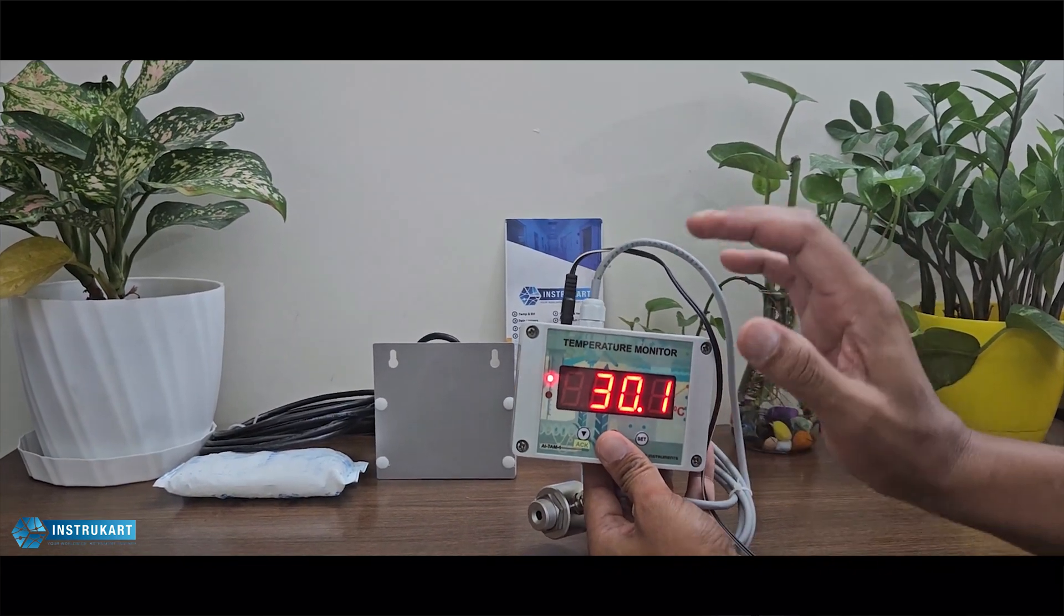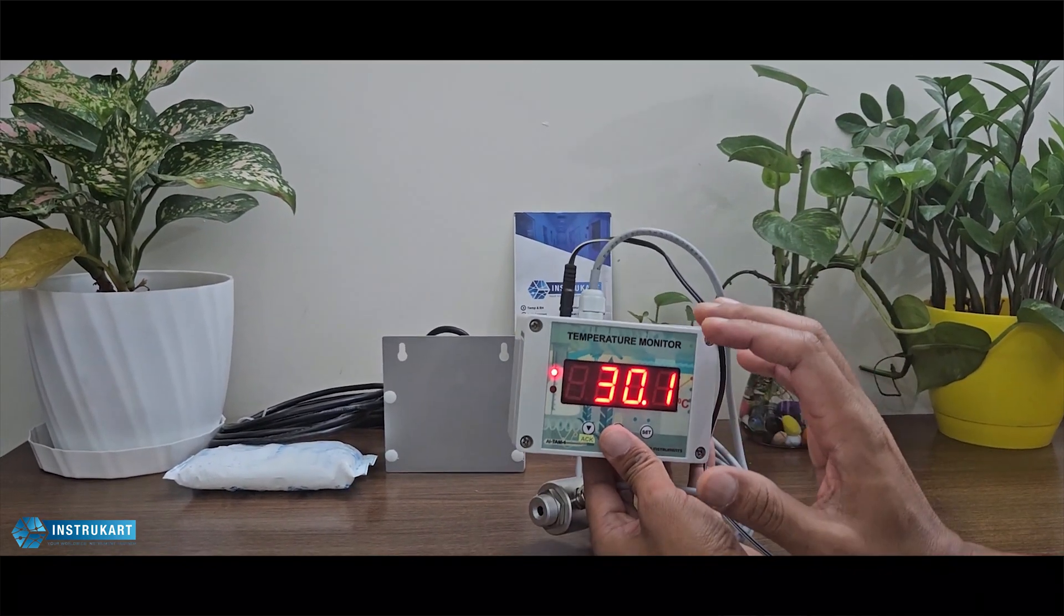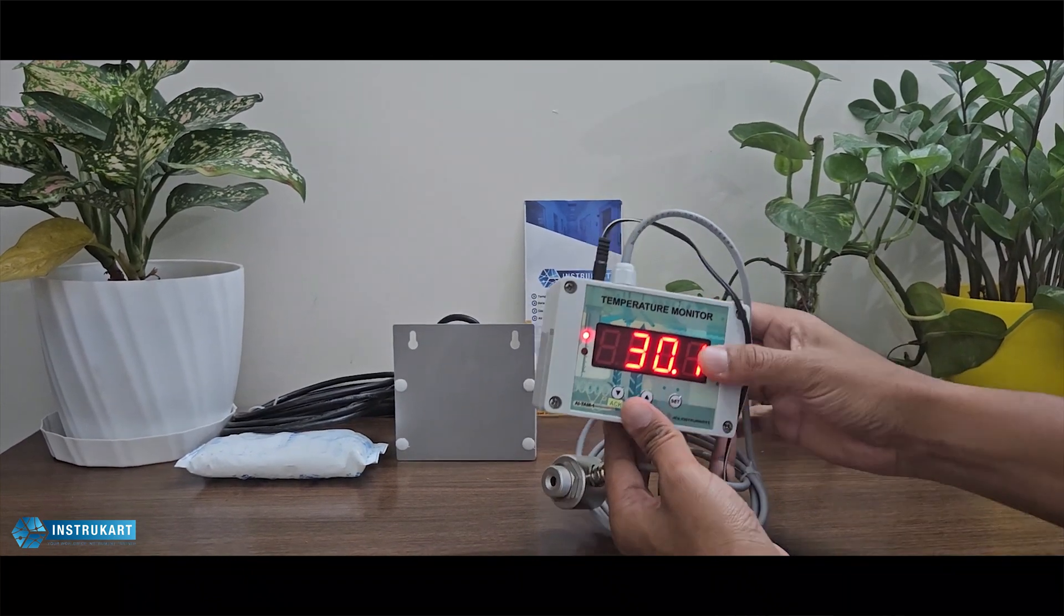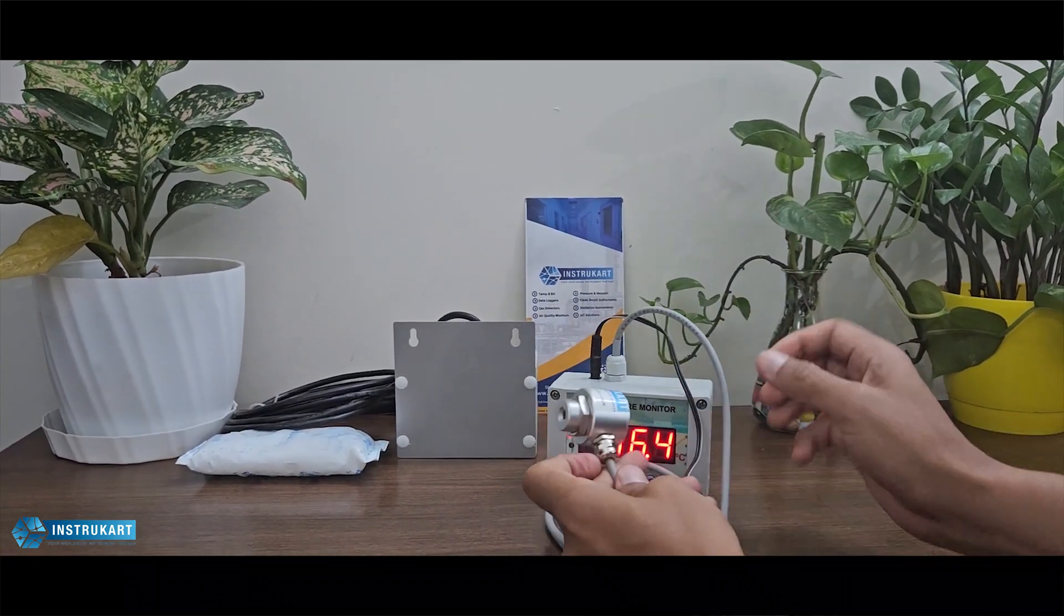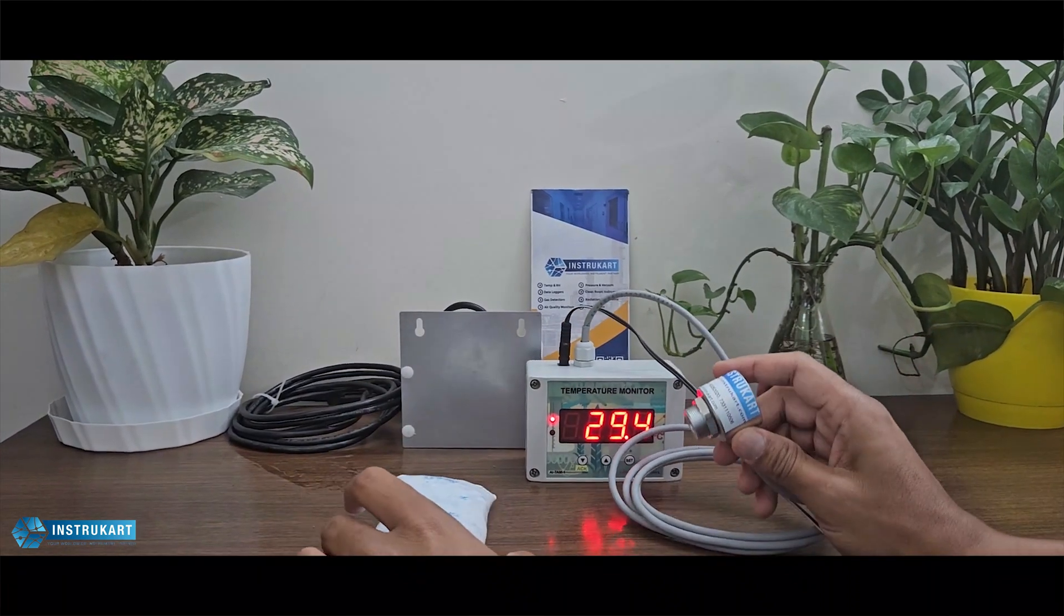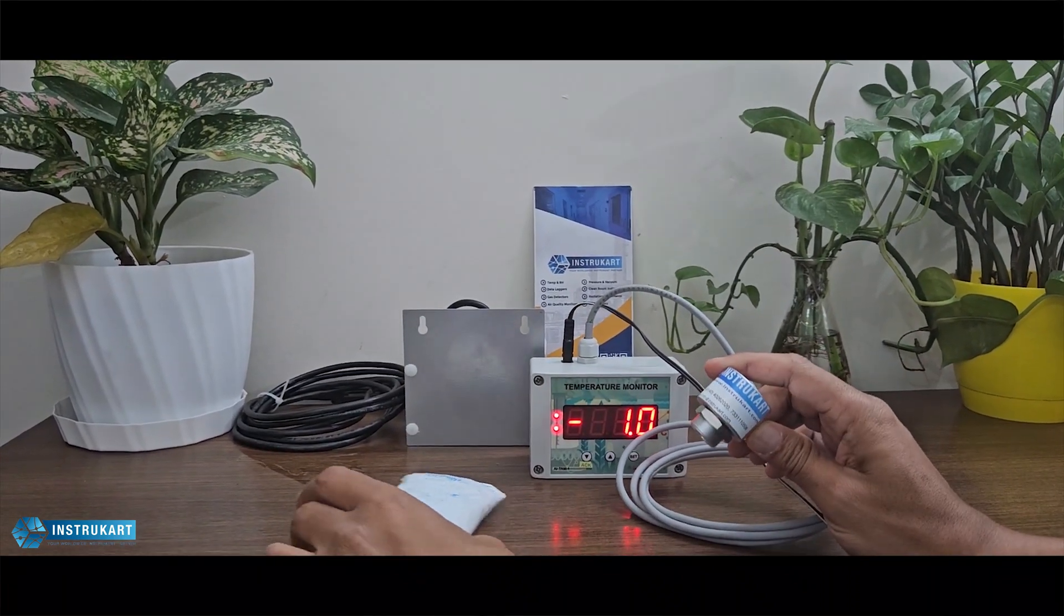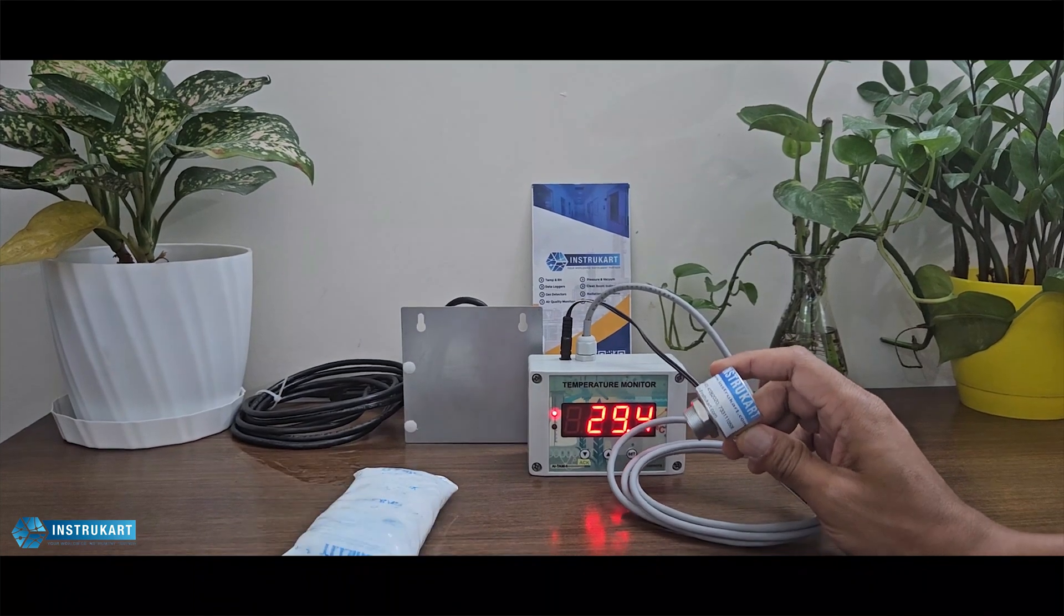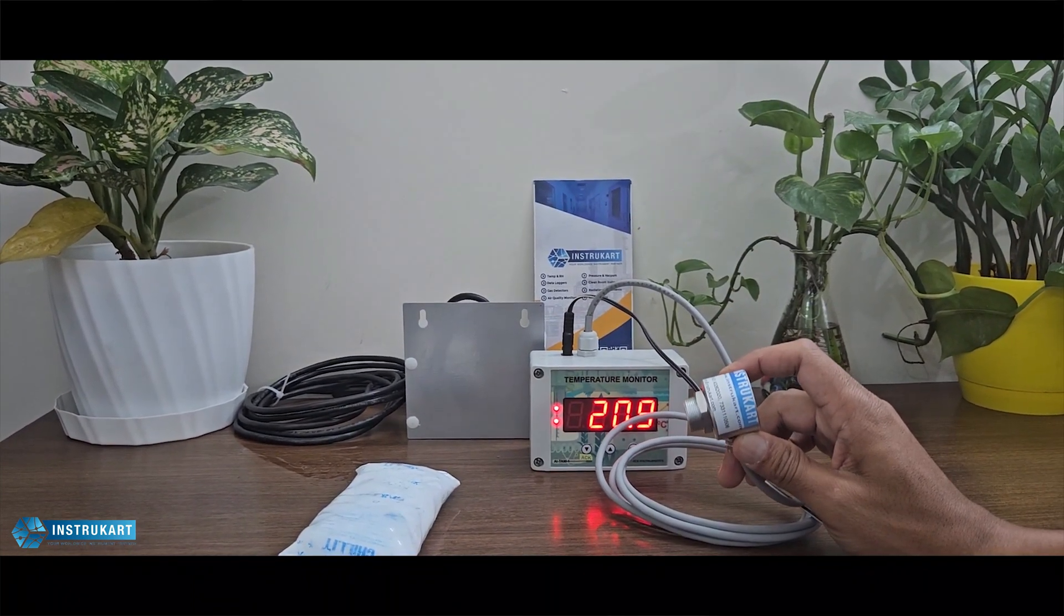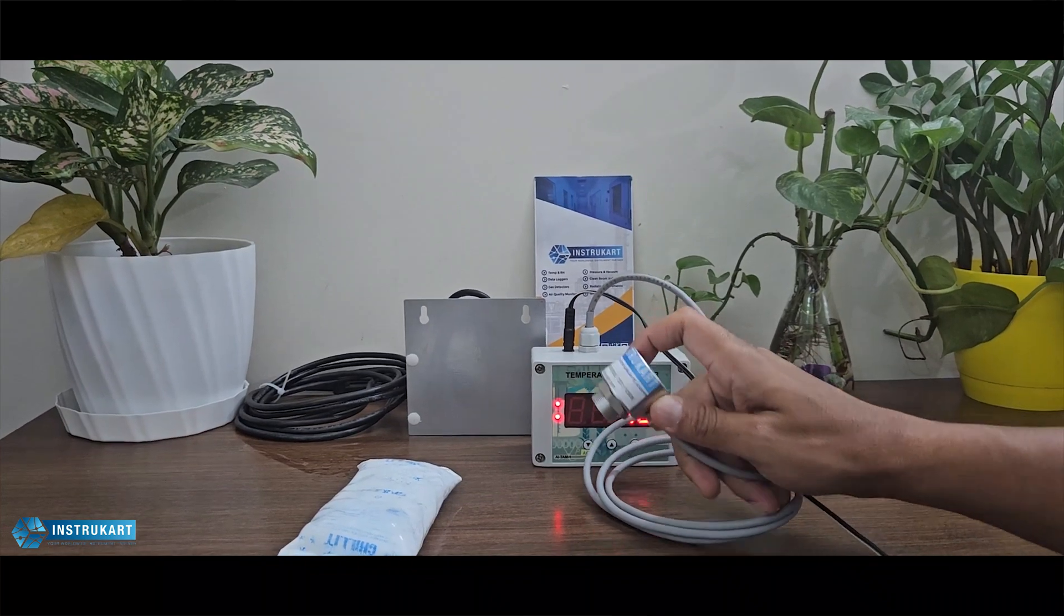Set point is that you can set between low and high in which the range has to be set. The response time I was just showing you, so I have just took an object to show the response time. So this is very quick in response the moment it sees the temperature.